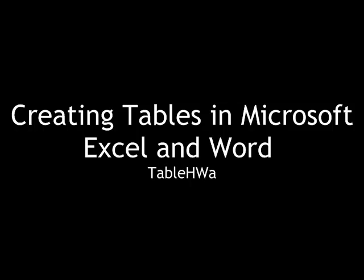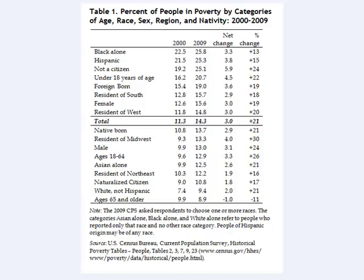This is the lab tutorial for creating tables in Microsoft Excel and Word using the principles of good tabular design from data analysis. During the lab you'll create a table showing the percent of people in poverty by categories of age, race, sex, region, and nativity from 2000 to 2009. You'll collect the relevant data online from the Census Bureau, organize the data using Excel, and format the table using Word.